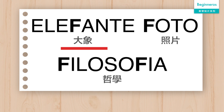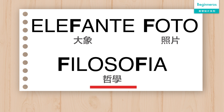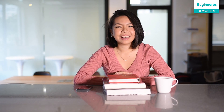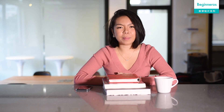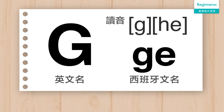接下來的 F 的發音像英文的 F 一樣，例如 Foto, Filosofia. G 西班牙文叫做 He，好像英文的 H 音一樣。而它的情況就跟 F 一樣，都是會因應背後的字母而改變發音的。